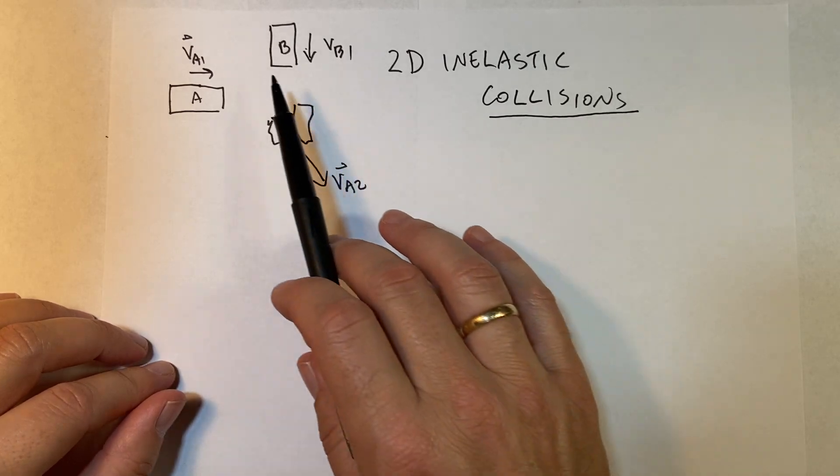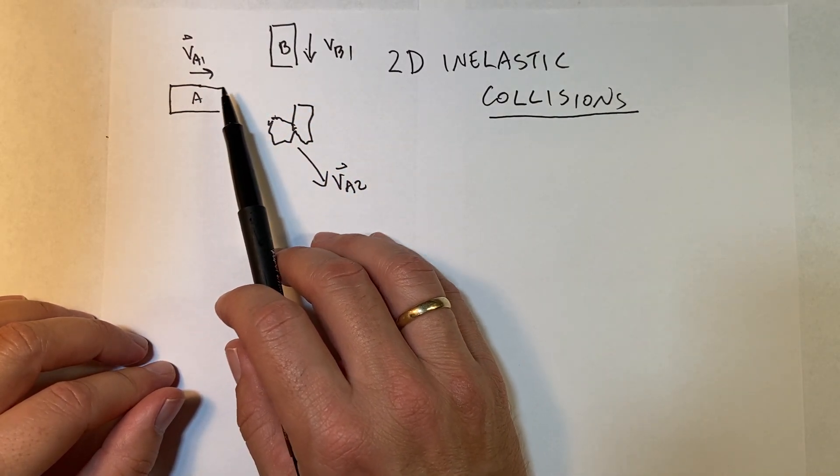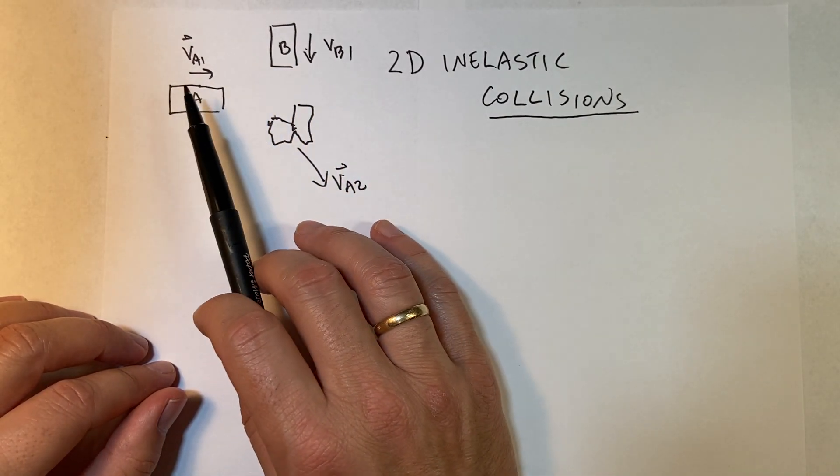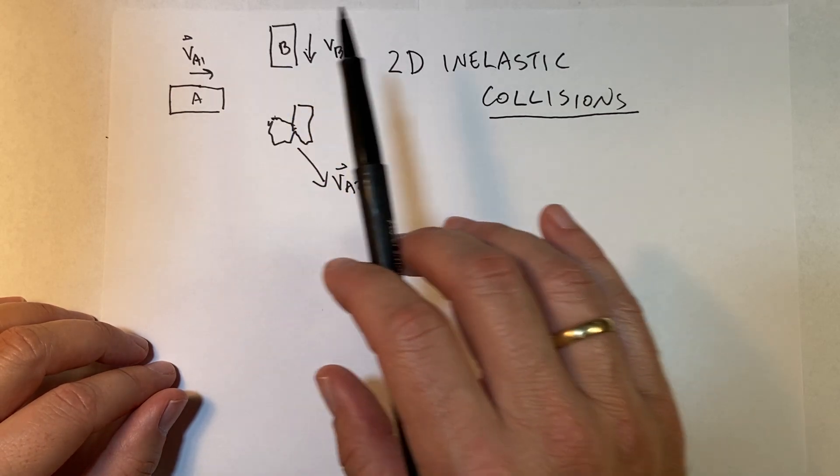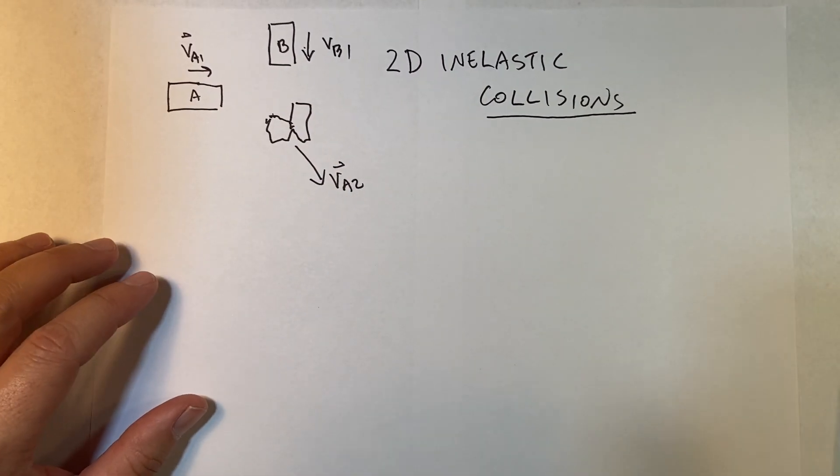Okay, the previous video was about two cars that collided in one dimension, but now what if it's in two dimensions? So this is an actual real problem of two cars, and we're looking at it from above.